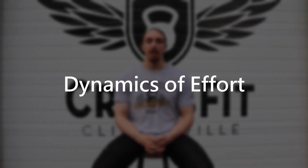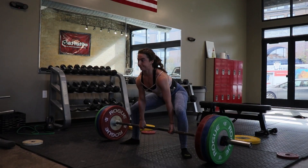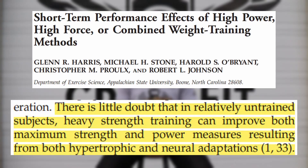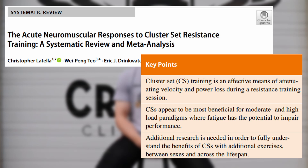The next aspect is dynamics of effort, which refers to the force-velocity characteristics of the training means as they relate to the sporting movement. This encompasses force magnitudes as well as movement velocity, and we can see the differences in high-load low-velocity training versus low-load high-velocity training. Each may have different transfer to the sporting task depending on how well trained the athlete is. A good example is cluster training, which enhances the velocity and force characteristics of the movement by minimizing intraset fatigue.